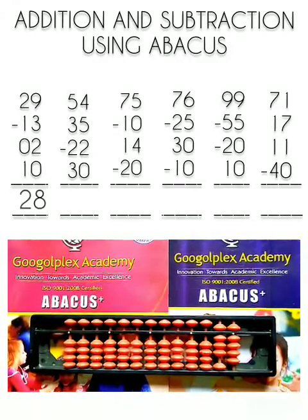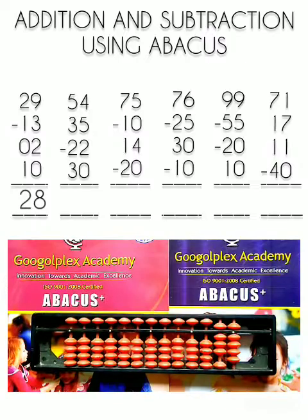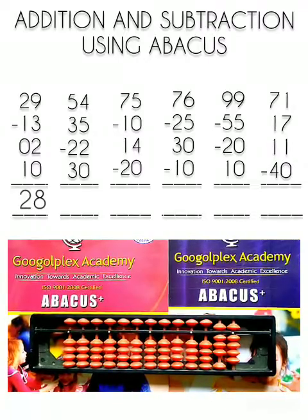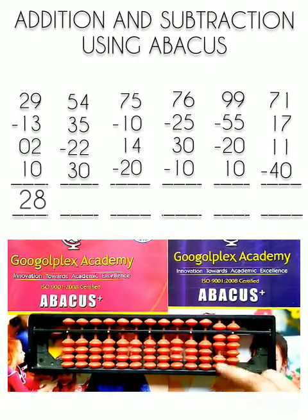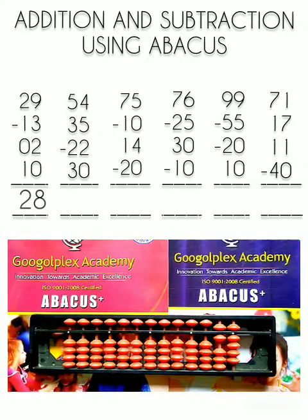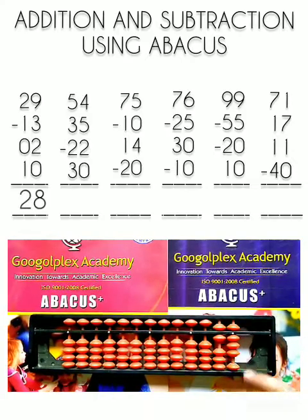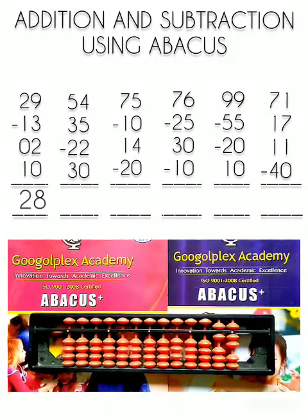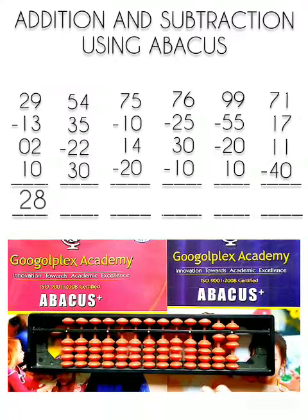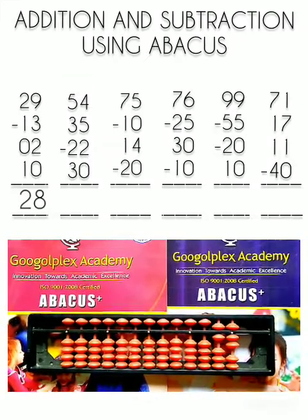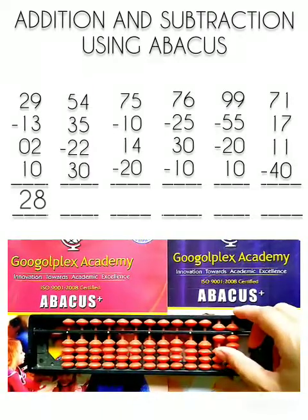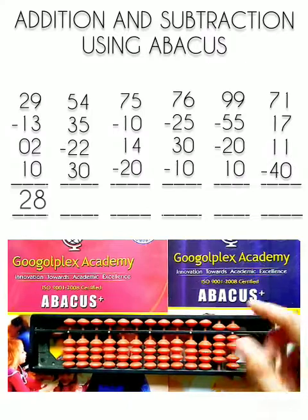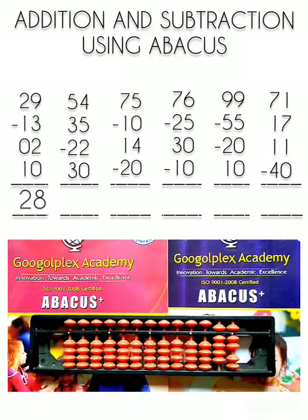Now we have to subtract 22 from this number. Minus 10, minus 20, minus 21, minus 22. Now we have to add 30 to this number. For adding 30 we will use the 10's rod, 3 beads of the 10's rod. 10, 20 and this is 30.